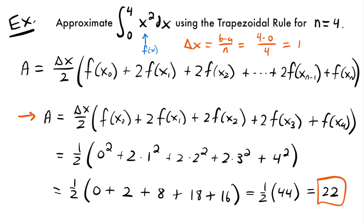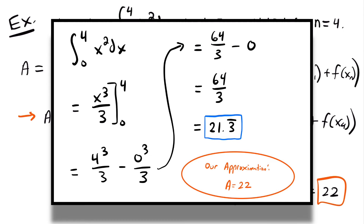So 22 is our approximation of the area under x squared from 0 to 4. If you're wondering how close this is to the actual area, we can evaluate the definite integral. I'll put that work on the screen — you can pause the video to look at it. As you can see, the approximation is pretty close to the actual value. Let's look at another example.